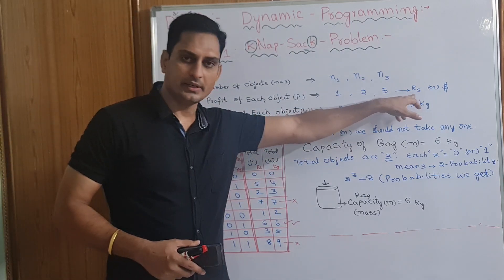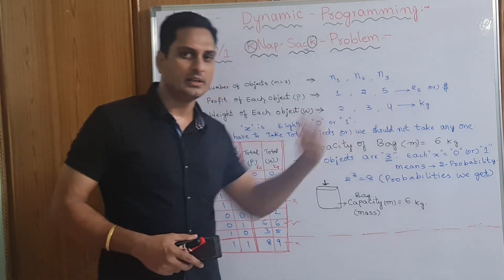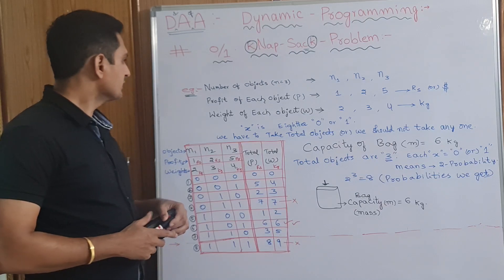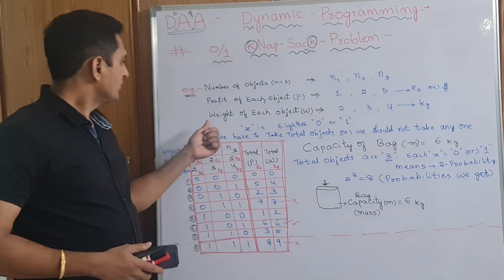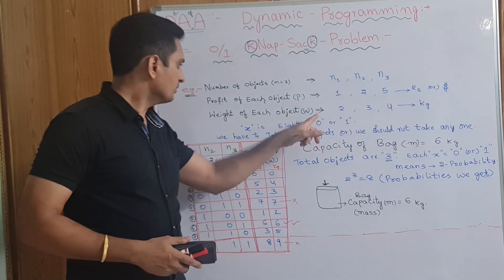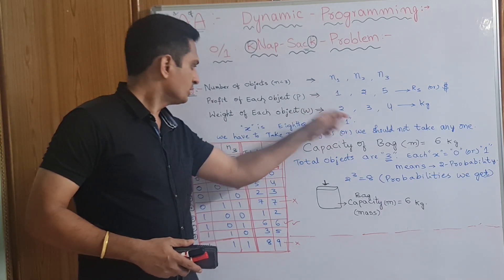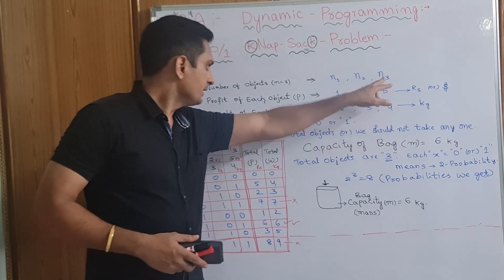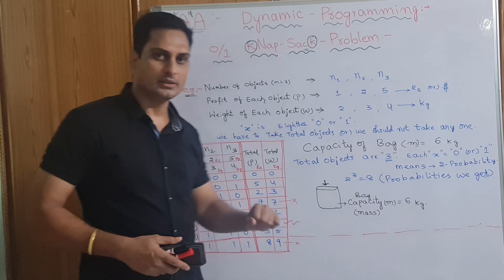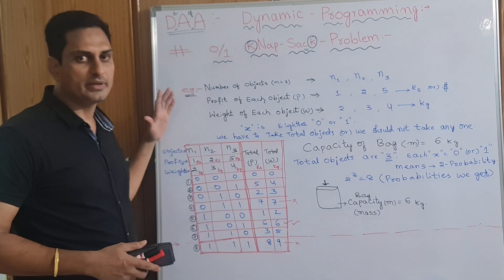For example, imagine rupees in Indian currency or dollars in any other currency. Rupees, 1 rupee, 2 rupees, 5 rupees profit. Weight of each object, W. N1 object weight 2 kgs, N2 object weight 3 kgs, N3 object weight 4 kgs. These are three objects in this scenario. I have taken example.